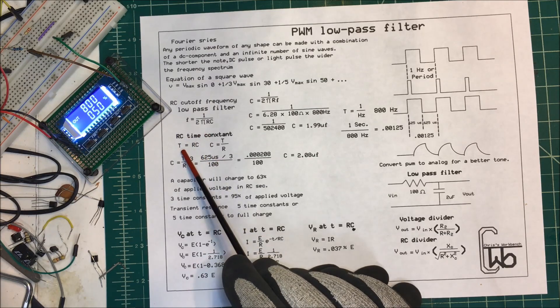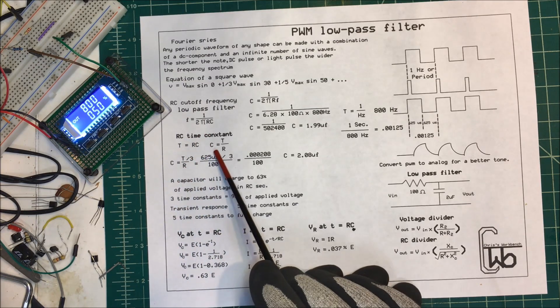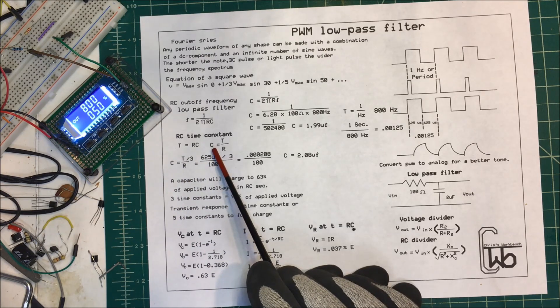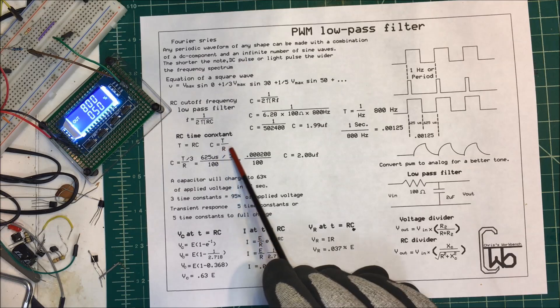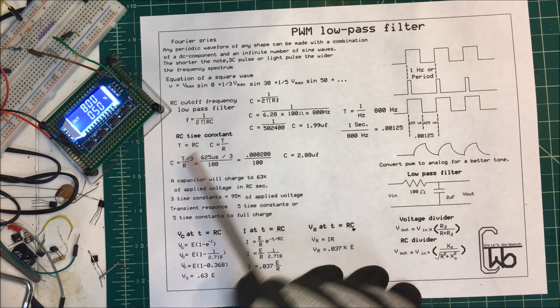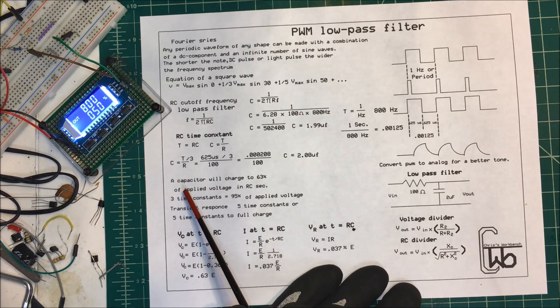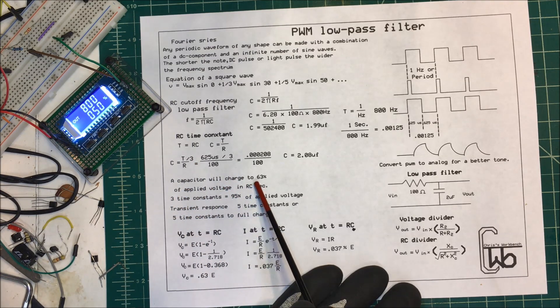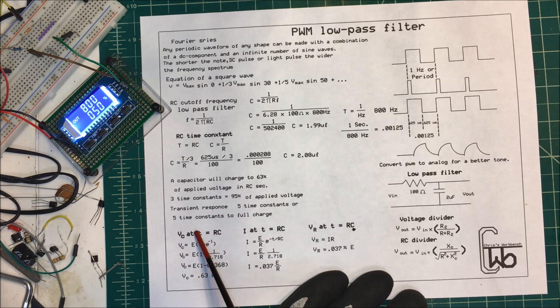Our formula for a time constant is T equals RC, resistance times the capacitance. To find our capacitance, we're picking 100 ohms for our resistance. We just take our resistance and divide that into our time. Now, a capacitor charges up to 63% of applied voltage in RC seconds.